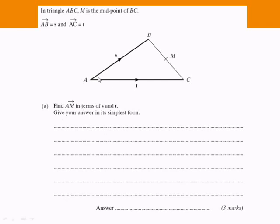The question is: find vector AM, that's from A to M, in terms of S and T. Give your answer in its simplest form. I've started off by saying going from A to M is the same as going from A to B first and then going from B to M next. So AM equals AB plus BM.